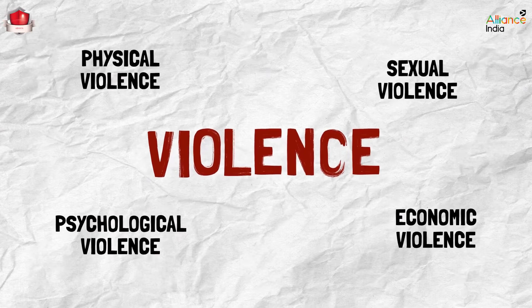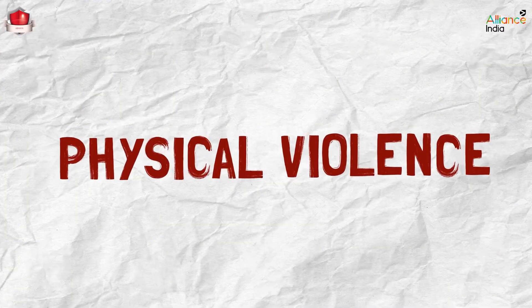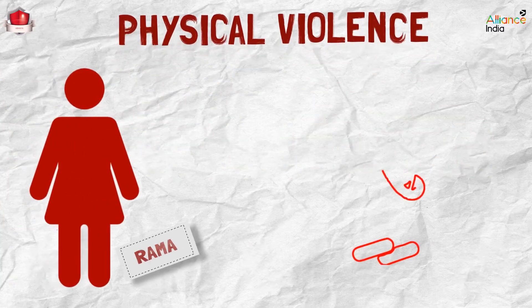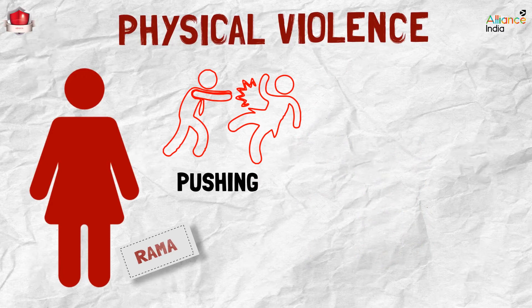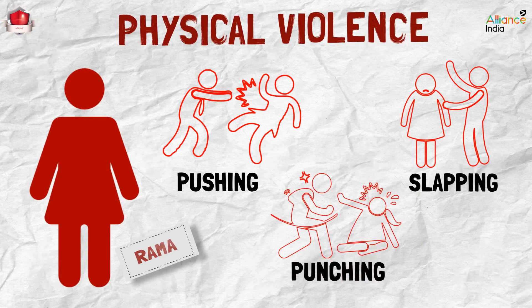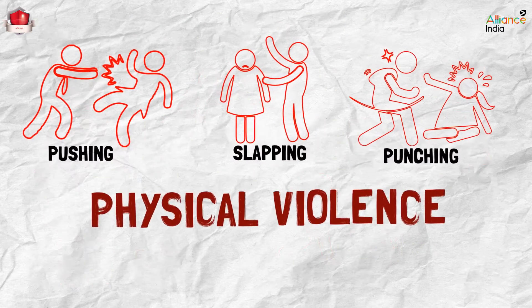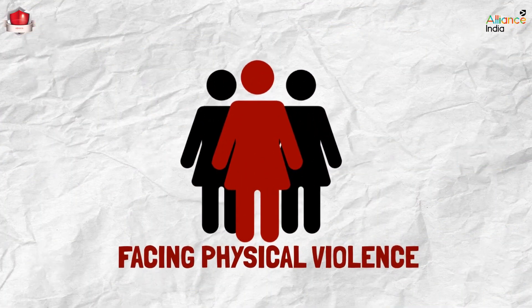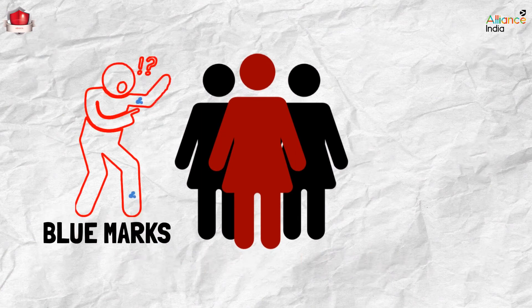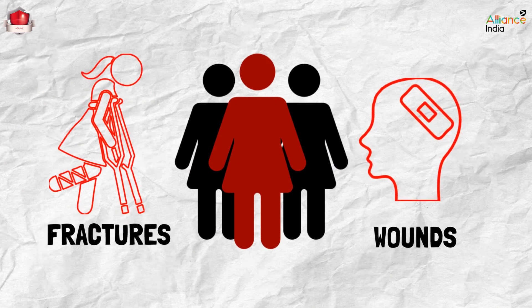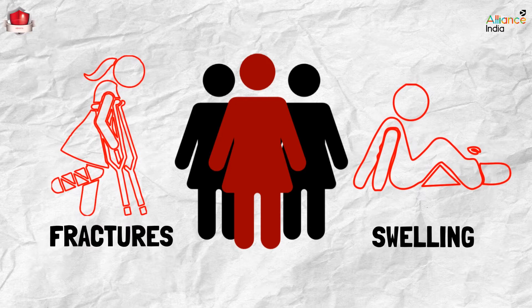One such form is physical violence. Meet Rama — her husband uses physical force against her. He pushes her, slaps her, and punches her. All these are examples of physical violence. Like Rama, if someone is facing physical violence, they may have blue marks of injury, wounds, fractures, or swelling on their hands and other parts of their body.